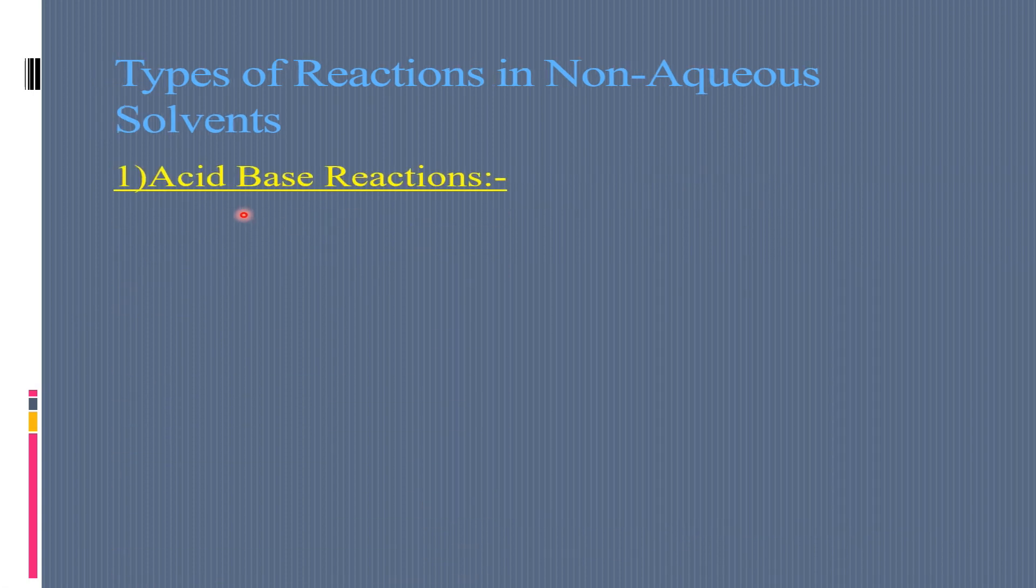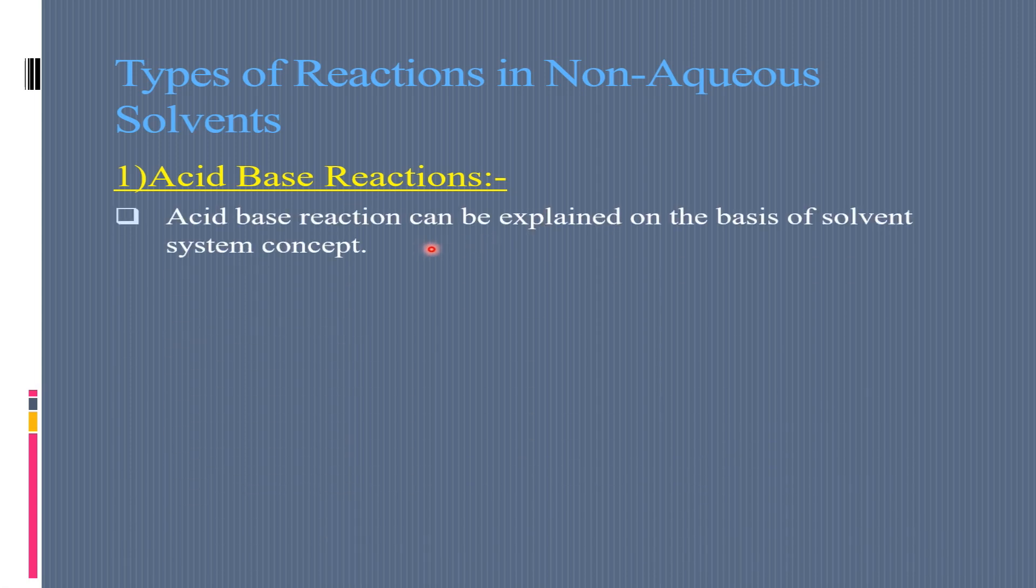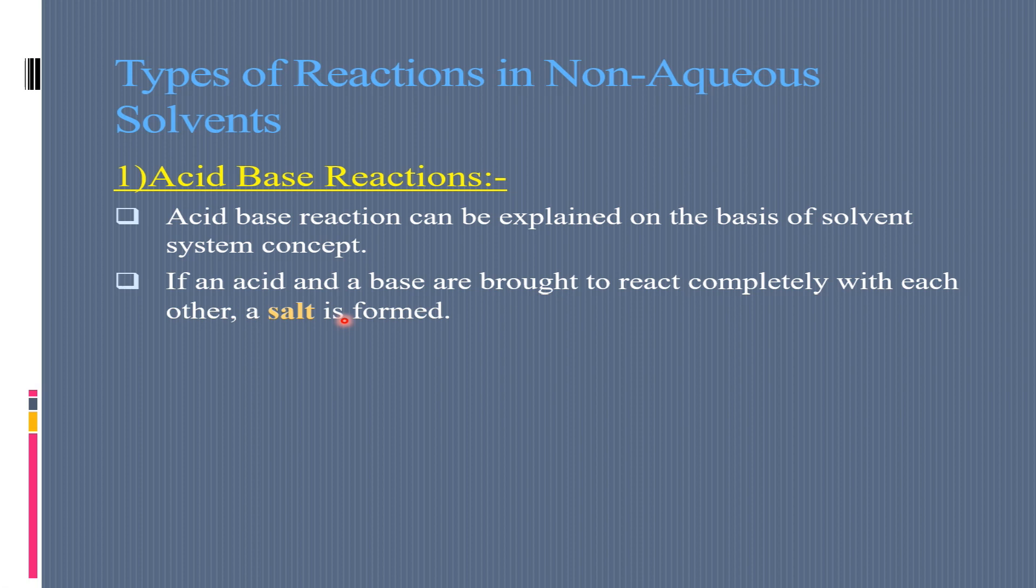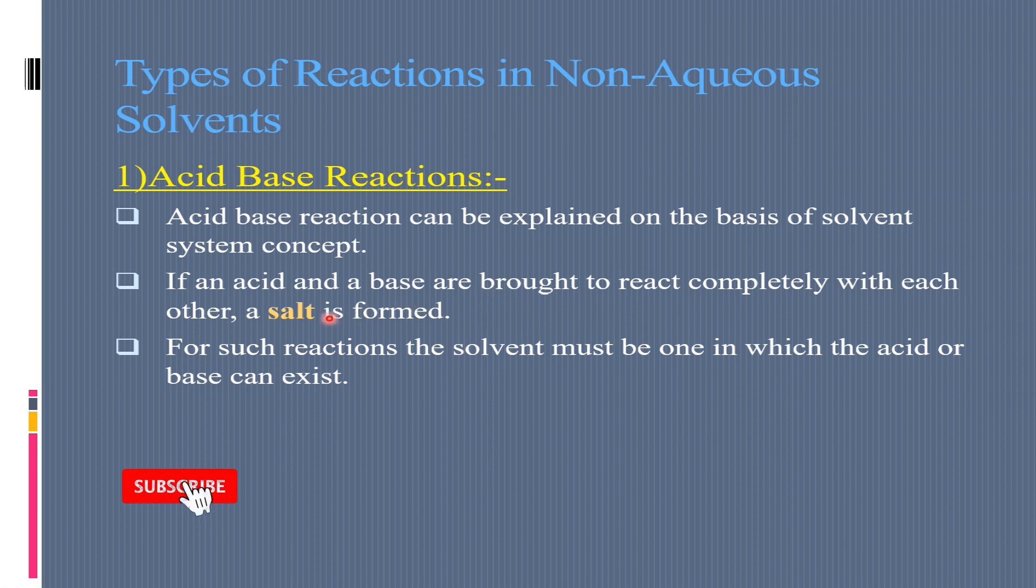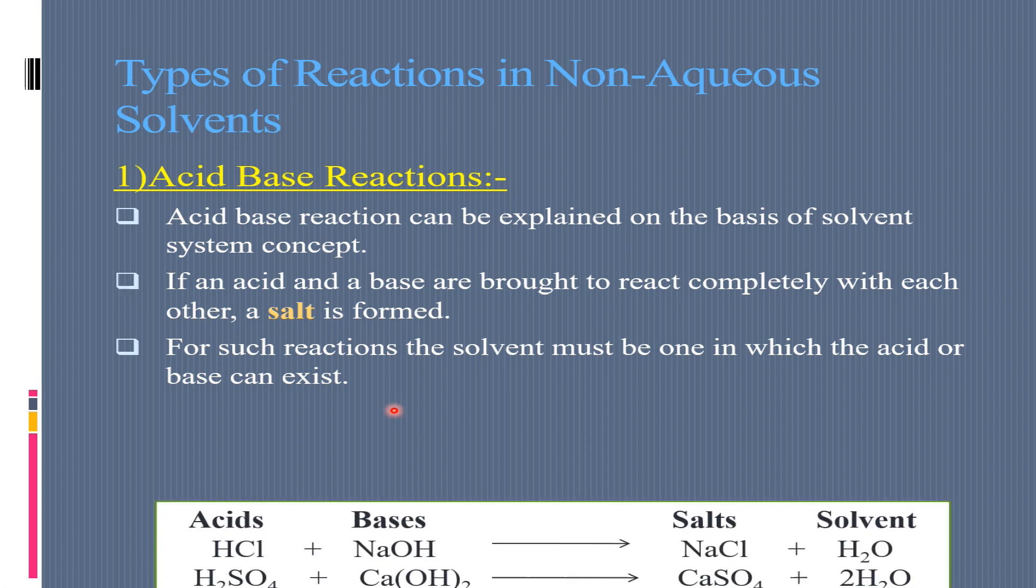First, we will discuss about acid-base reactions. Acid-base reaction can be explained on the basis of solvent system concept. If an acid and a base are brought to react completely with each other, then we know that a salt is formed. For such reactions, the solvent must be one in which the acid or base can exist. If acid or base can react to form salt, then it will be a salt.